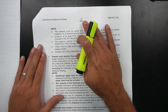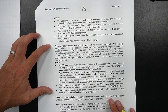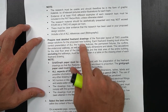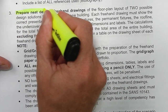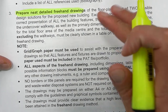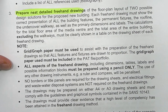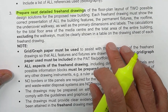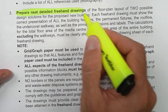Let's take a look at page 12 of your civil EGD PAT, and we're going to zoom in at number three: preparing neat detailed freehand drawings. I'd like to start off by reading through exactly what is required, then we'll look at the checklist, and after that we'll look at how to do it with some practical examples.